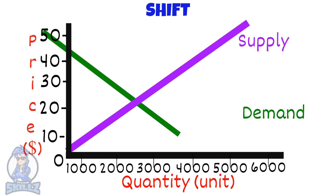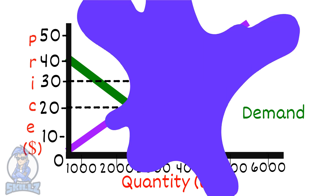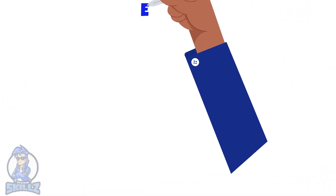So let's say at first the demand curve is such that the equilibrium price is P1. Now the demand curve shifts, and the equilibrium price moves to P2 — that is the new point where supply and demand are equal. The same change would happen if the supply curve shifted.